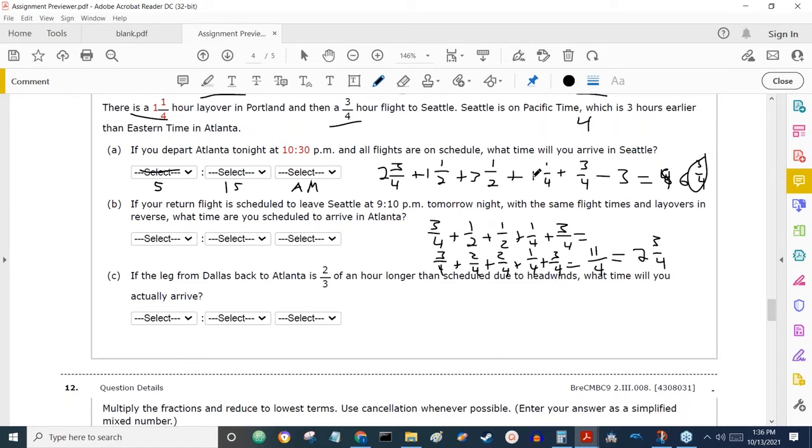They say your return flight is scheduled to leave Seattle at 9:10 PM tomorrow night with the same flight times and layovers. What time are you scheduled to arrive in Atlanta? Now, you might be tempted to just add 6¾ here, but remember about the time zone. The total flight time without the time zone adjustment was 9¾ of an hour. If we're going from Seattle to Atlanta, we're increasing our clocks by 3 hours because we're going in the opposite direction with our time zones, so 12¾ more should be the time. That's easy because if you go 12 hours away, it's just the same time but in AM, so that's 9:10 AM plus 45 minutes, so that would be 9:55 AM.